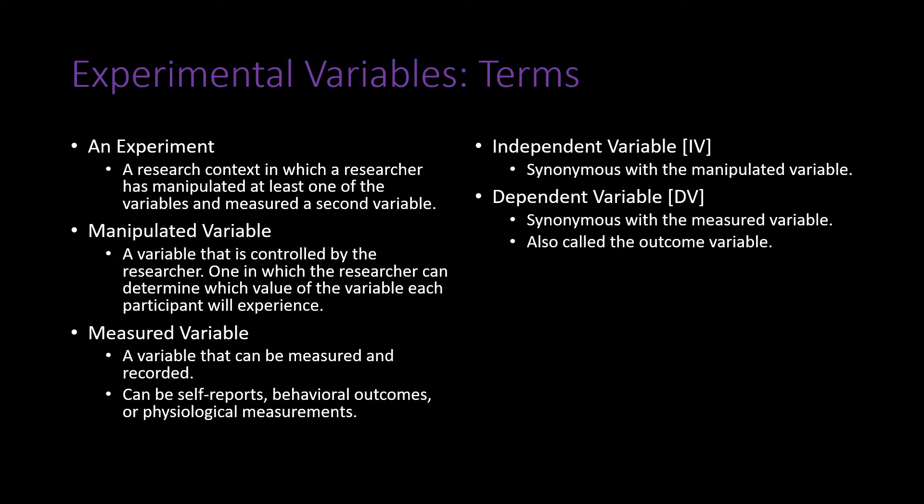The dependent variable, also sometimes called an outcome variable, is the variable one is interested in measuring to see the effect the manipulation had on participants. Levels are what we commonly use to define the various conditions of an independent variable — so the independent variable of serving size had two levels: one large bowl and one small bowl. Each of those is a level of the independent variable.